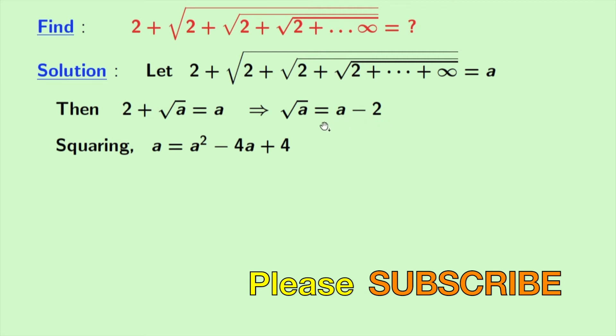Doing that we get a is equal to a minus 2 whole square. And applying the formula of a minus b whole square, we get a square minus 4a plus 4 in the right hand side.